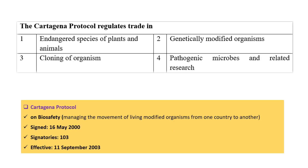Question twelve: The Cartagena Protocol regulates the trade of what? The Cartagena Protocol is related to biosafety and the movement of genetically modified organisms (GMOs) from one country to another. It was signed on 16 May 2000, has about 103 signatory countries, and became effective on 11 September 2003. Checking the options: endangered species — wrong; genetically modified organisms — correct; cloning of organisms — wrong; pathogenic microbes and related research — wrong. So the right answer is genetically modified organisms.